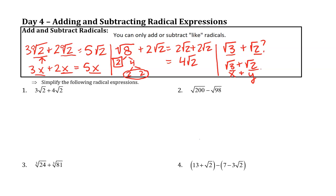Problem number 1: simplify the following radical expressions. 3 times the square root of 2 plus 4 times the square root of 2. Here we have a like radical, square root of 2. 3 of them plus 4 of them is 7 of them, so it becomes 7 times the square root of 2.